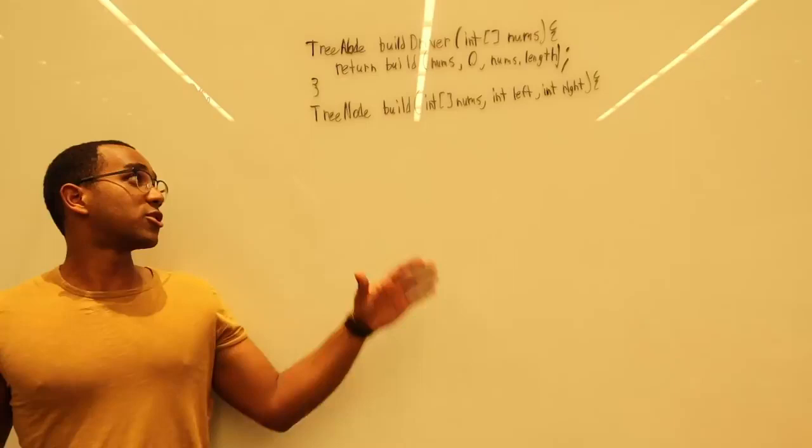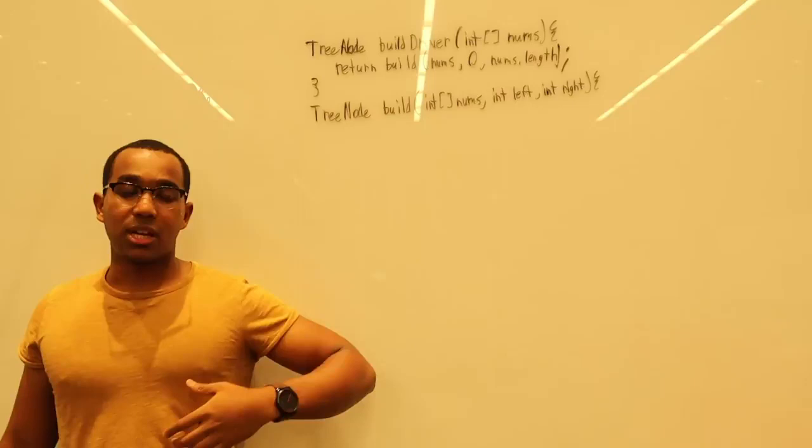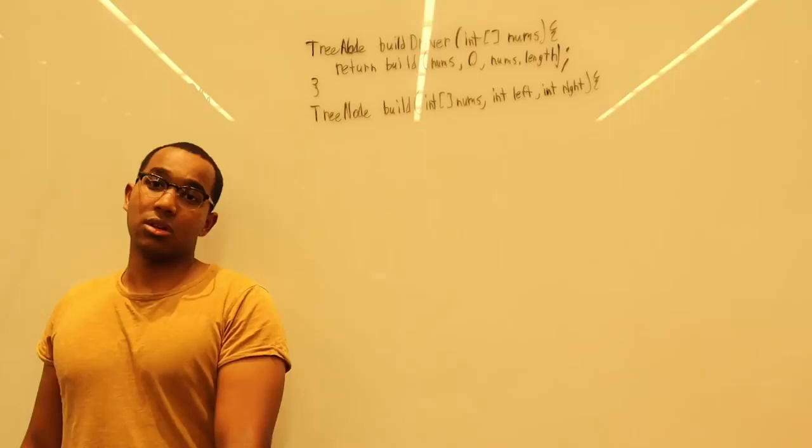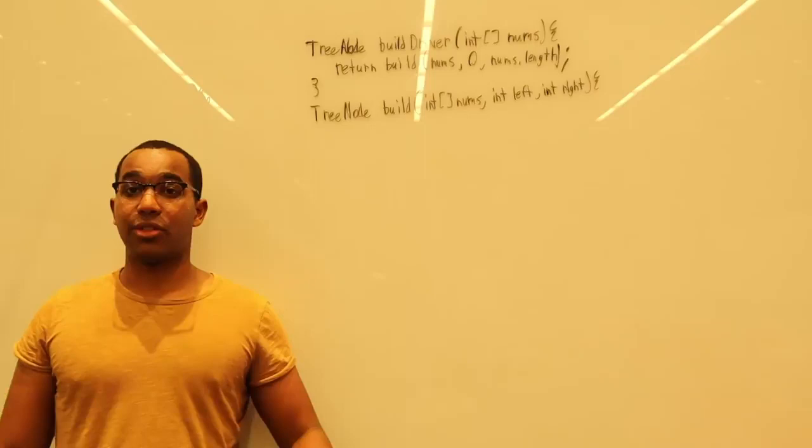Okay, so we start out considering the whole range. We consider zero to the length of the array. And then we can craft a base case. If left is greater than or equal to the right, we just ultimately return null. Because we have no range to search. We have nothing to materialize. This is just going to be a null subtree. There's no values to go between and search.